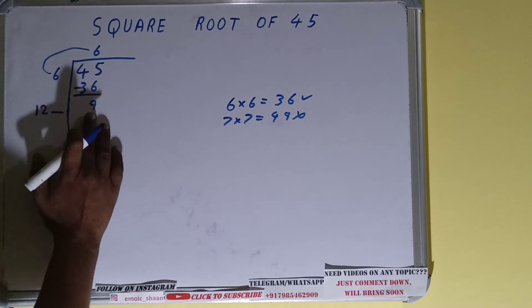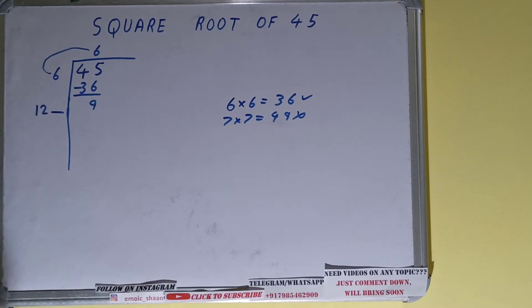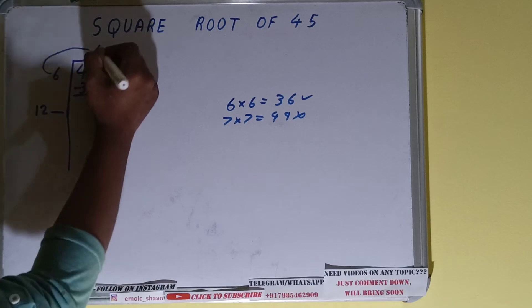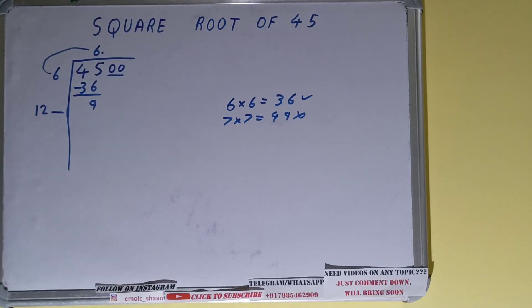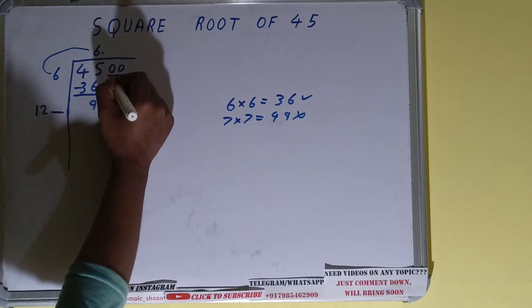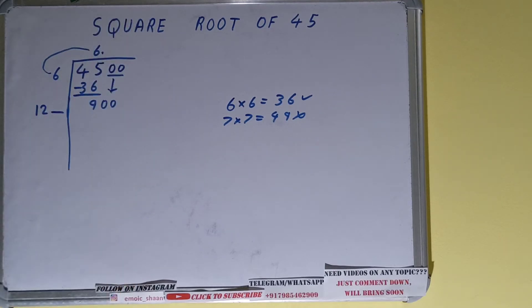And you can see this number 9 has become smaller than this three digit number, right? So to make it bigger so that we can divide, we have to take a decimal here. And once we put decimal, we can bring pair of zeros. Remember, we always take pair of zeros and not single zeros.